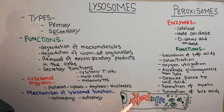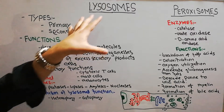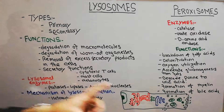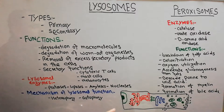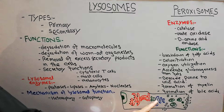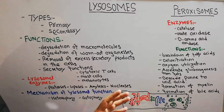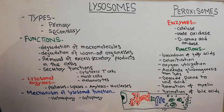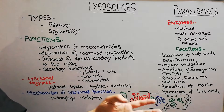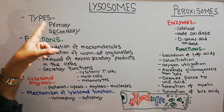First we will discuss lysosomes, then peroxisomes. Lysosomes are made from the Golgi apparatus: when a signal from the nucleus comes to the rough endoplasmic reticulum, proteins are formed which travel towards the Golgi apparatus. Inside the Golgi apparatus they are packaged, and when packaged they become vesicles containing enzymes or proteins — these are known as lysosomes. They may be of two types: primary lysosomes or secondary lysosomes.